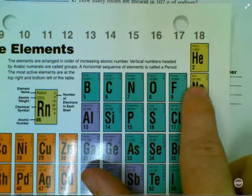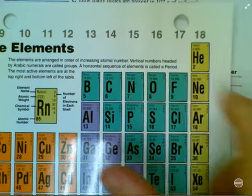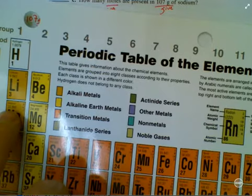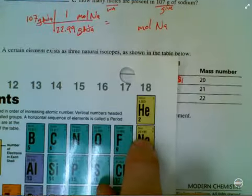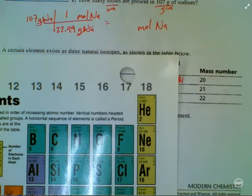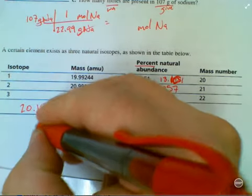Neon. 20.18. If I go up to the next one, just to double check, that's up to 22.99, almost 23. So this element that I just calculated, the average atomic mass, the weighted average here, is neon. So this is neon.